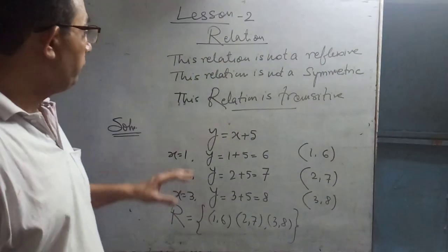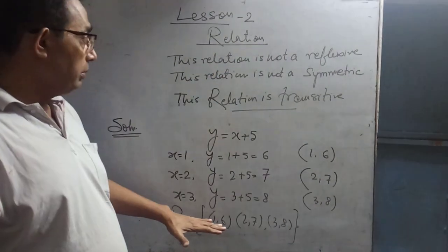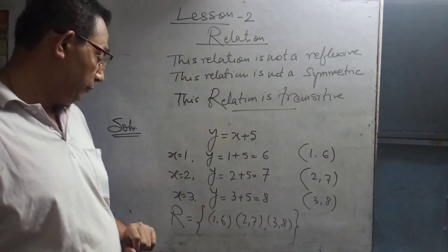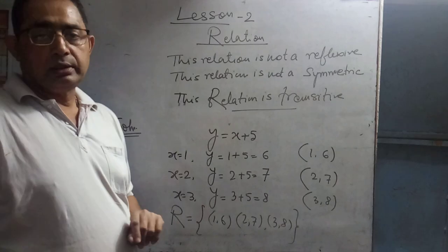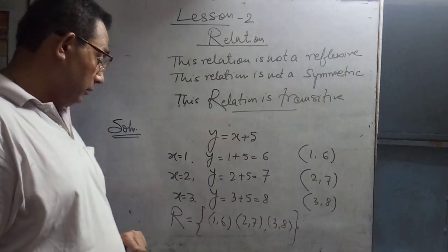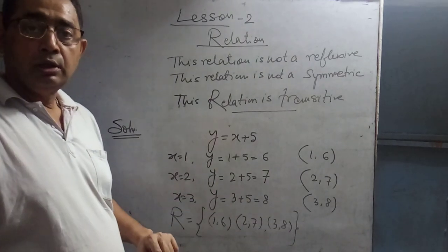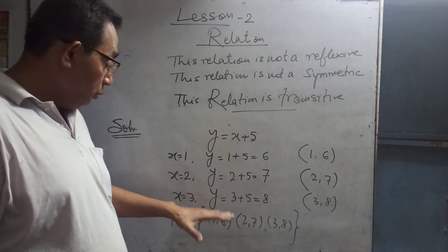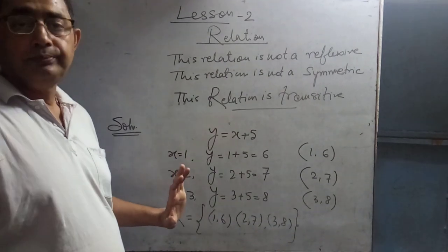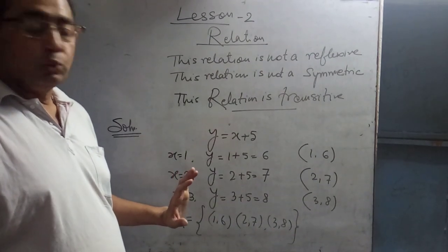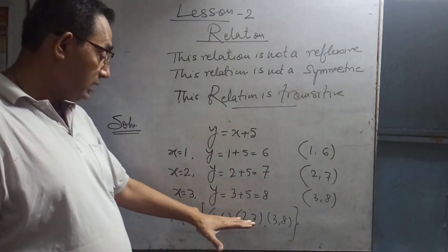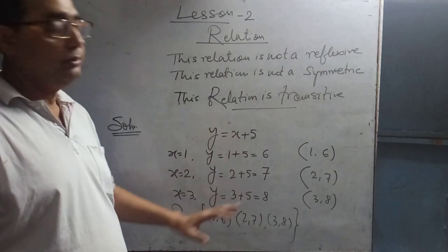To summarize: it is not reflexive because no identical (one-one) relation is present. It is not symmetric because no opposite relation exists. Since no situation arises to violate transitivity, this relation is transitive.